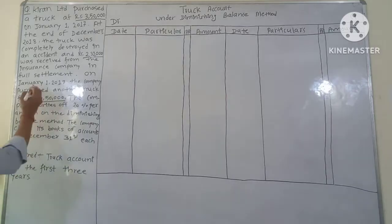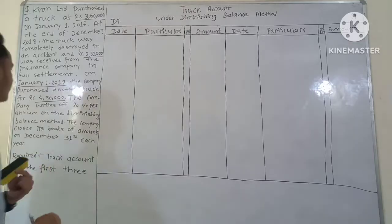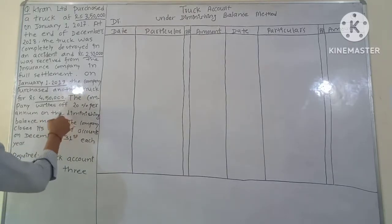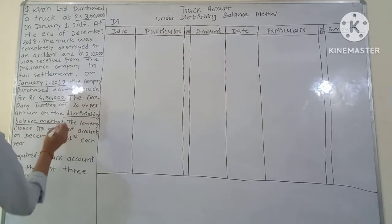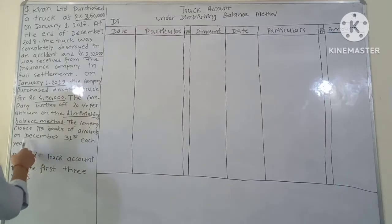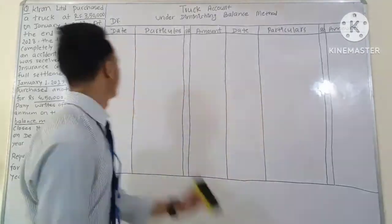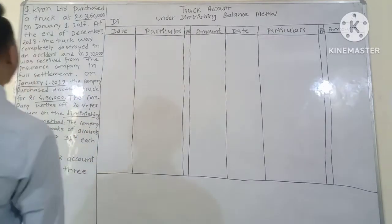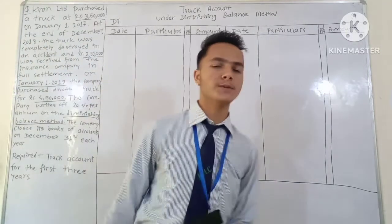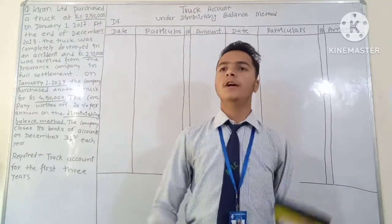The company writes off depreciation at 20% per annum on the diminishing balance method. The company closes its books of accounts on December 31st each year. We are required to prepare the truck account for the first three years, showing the debit side and credit side entries.